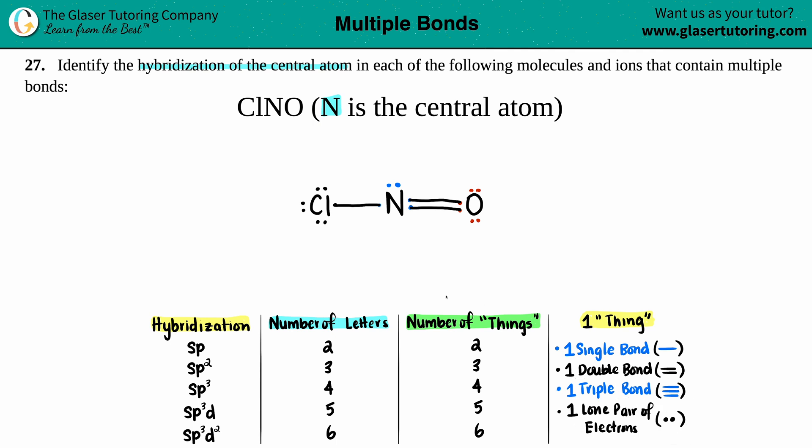Let's see what's going on with the nitrogen. The nitrogen has a single bond - that's one thing. It's got one double bond - even though there's two lines, that's just one thing, so total of two things. It's got one lone pair, so that's three things.